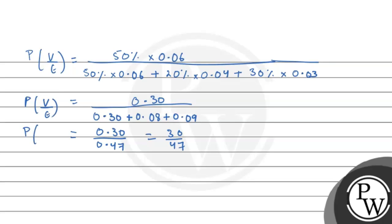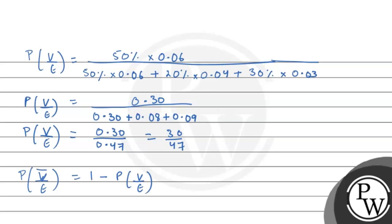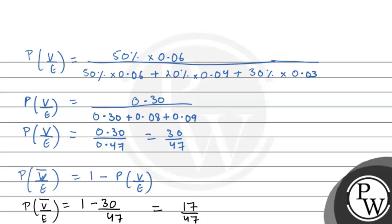The error is committed and the form is processed by Vinay, by which error is committed. We find the error committed but the form does not process by Vinay. So probability of V' given E equals 1 minus probability of V given E, which gives us 1 minus 30 by 47, that is equal to 17 by 47. So Vinay doesn't process the form and the error is committed — the answer is option D. Hope you all understand well. Best of luck, thank you.